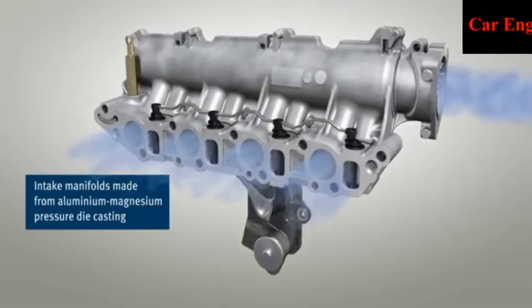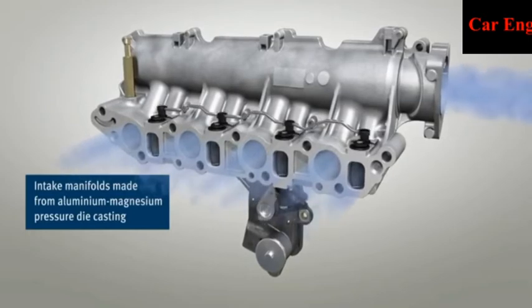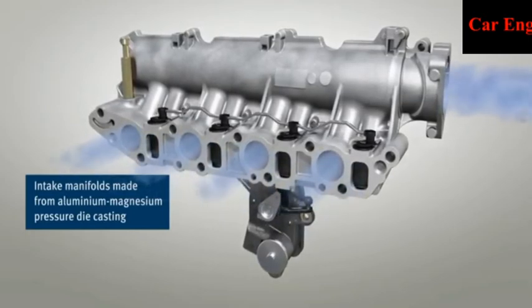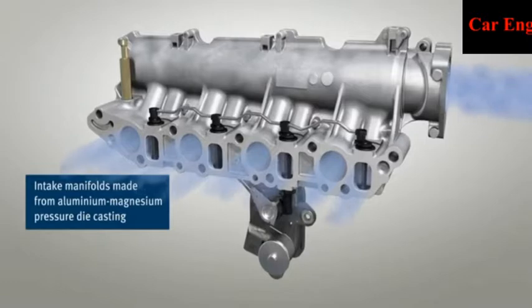The inlet manifold carries the air-fuel mixture from the carburetor to the cylinders. The exhaust manifold is the set of pipes carrying exhaust gases from the cylinder head to the exhaust system.